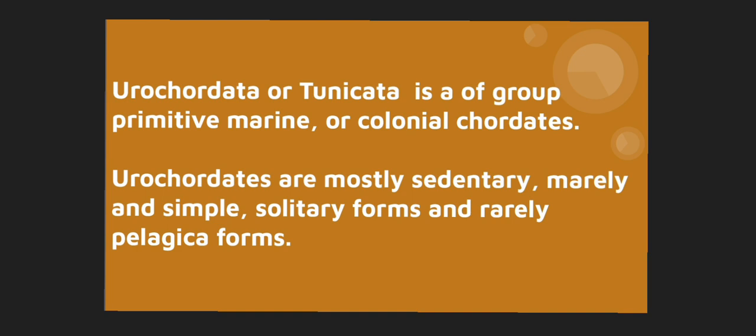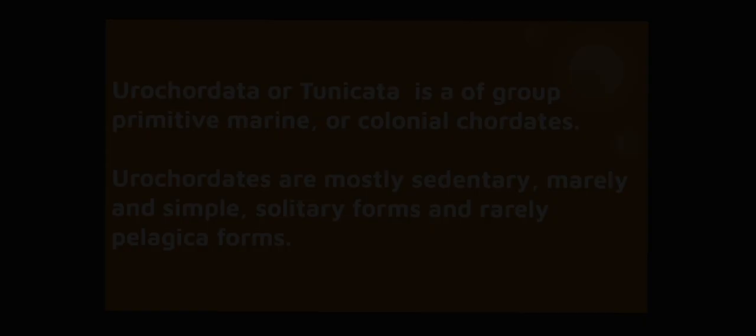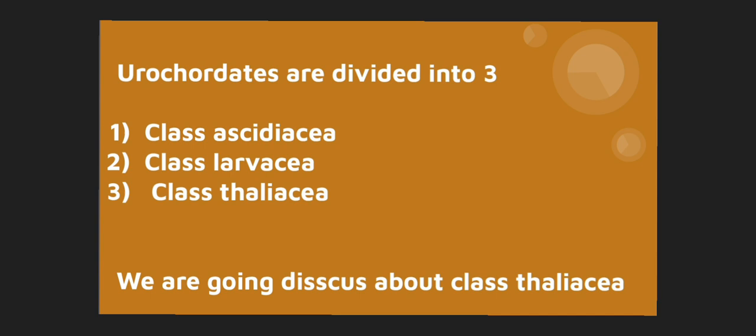Eurochordata or Tunicata is a group of primitive marine solitary or colonial chordates. Eurochords are mostly sedentary and rarely pelagic forms. Eurochords are classified into three classes: class Ascidiacea, class Larvacea, and class Thaliacea.